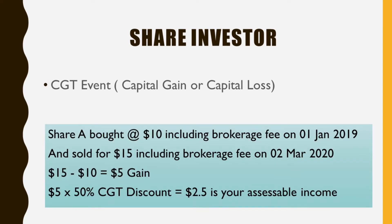Let's assume Share A was bought at $10 including brokerage fees on 1st January 2019, and sold for $15 including brokerage fees on 2nd March 2020, which is more than 12 months. The sale price is $15 minus the purchase price of $10, giving a $5 gain. Since the shares were held for more than 12 months, I can apply the 50% CGT discount: $5 multiplied by 50% equals $2.50. That $2.50 is your assessable income and must be reported to the ATO.